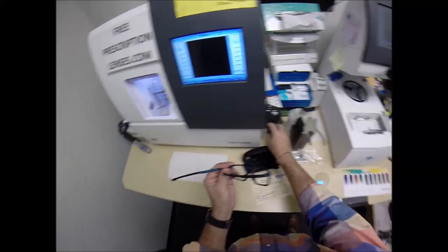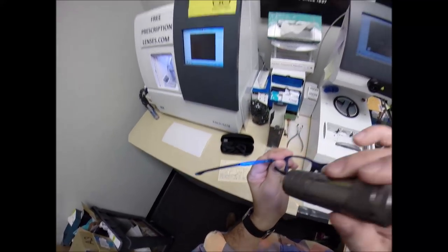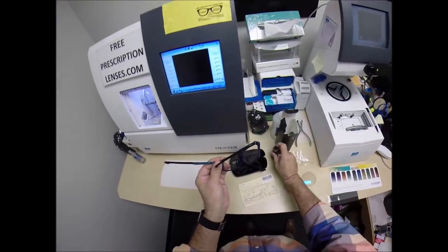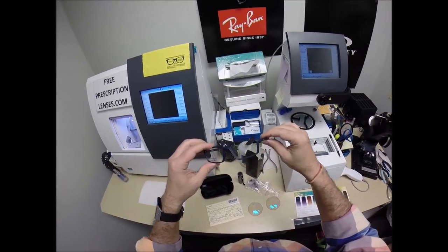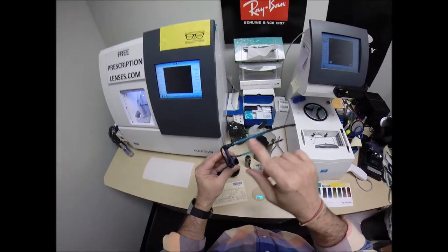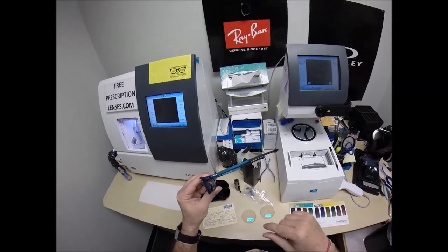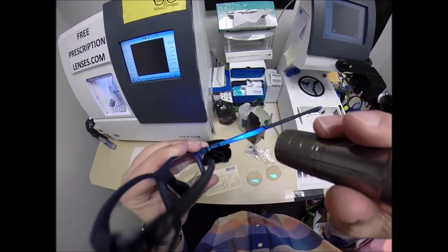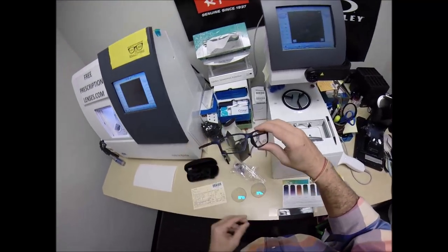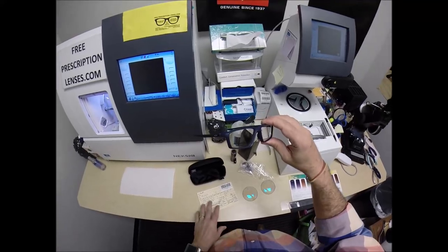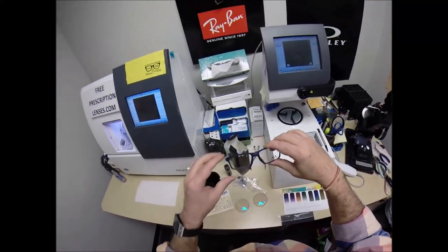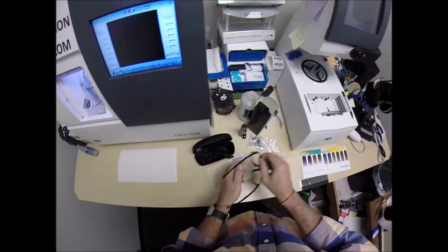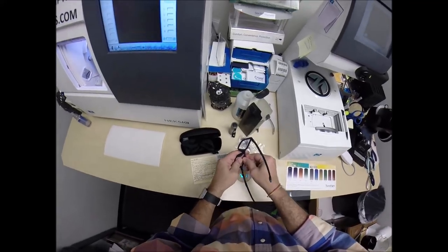This is the Oakley 8138, the chamber, color 05 universe blue in the 53 eye size. Really cool frame, dark blue frame, slightly different color blue on the temples with the little white Oakley logo. Of course, the rubber temple tips. Let's get him on his face.